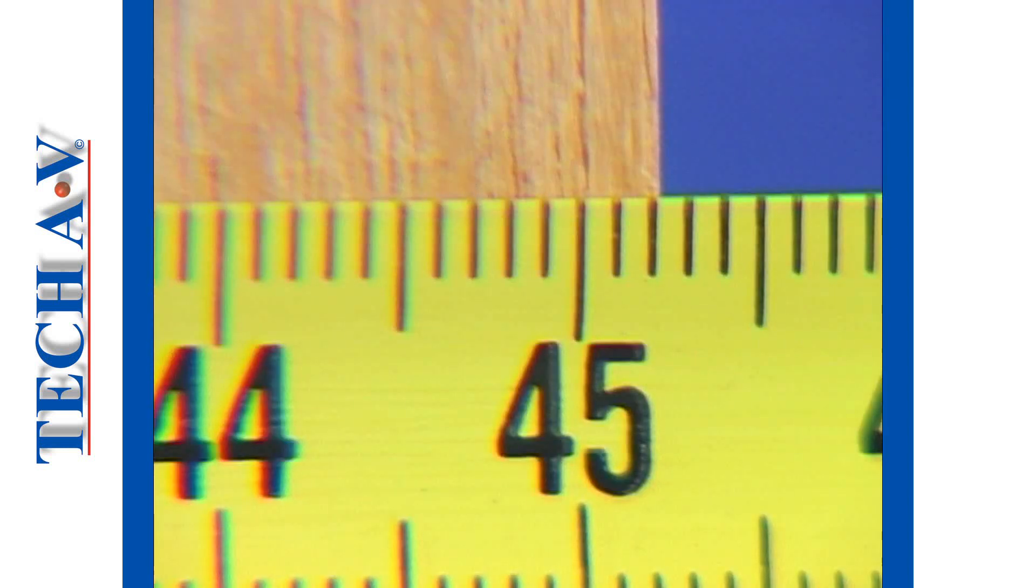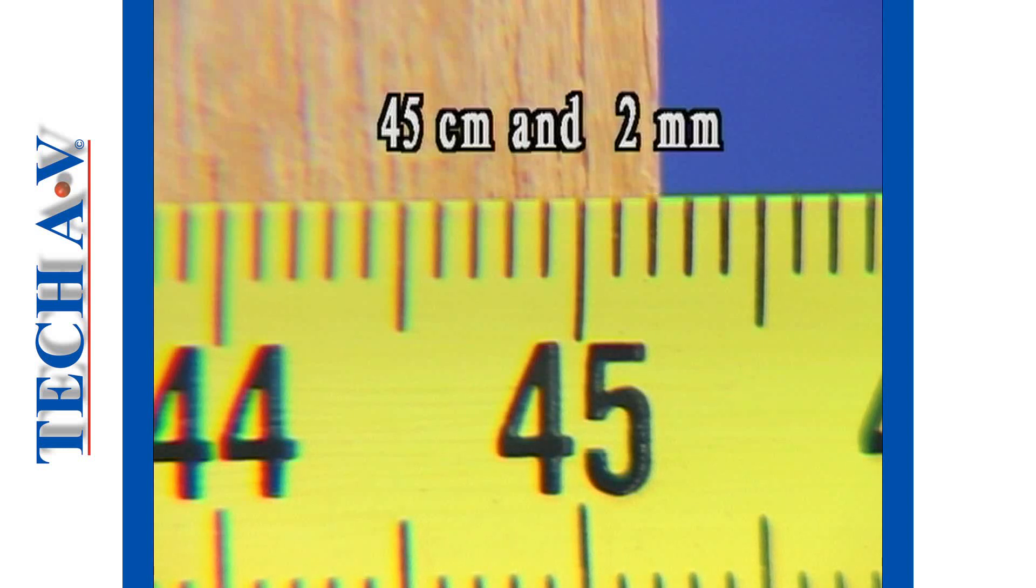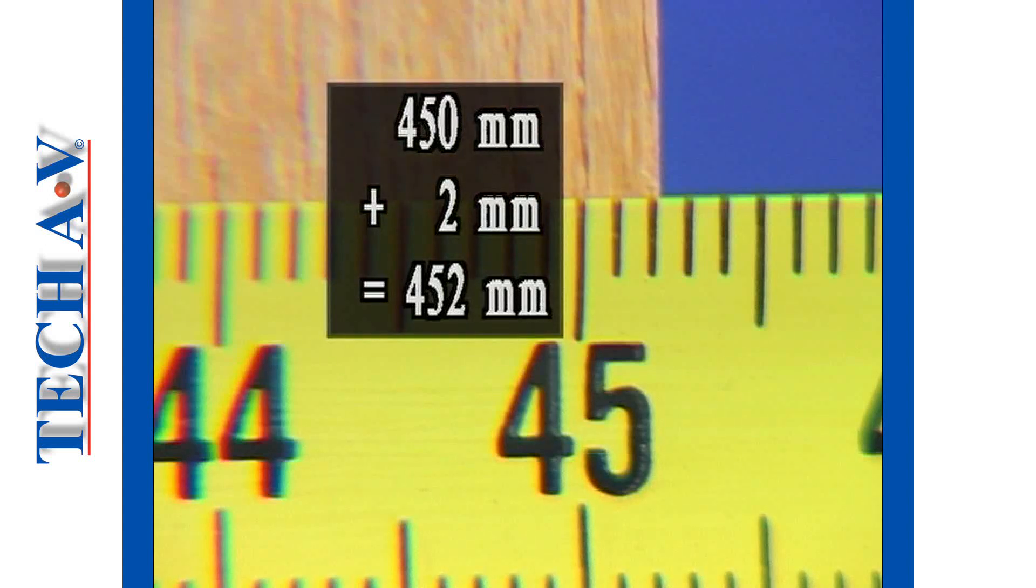In our example the reading is 45 centimeters plus 2 millimeters. We could say that our workpiece is 45 centimeters and 2 millimeters long, but that's not really good engineering language. It's better to say that our workpiece is 452 millimeters long, which is made up by saying that 45 centimeters is the same as 450 millimeters plus 2 millimeters.